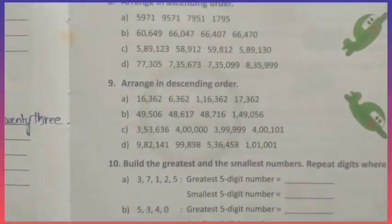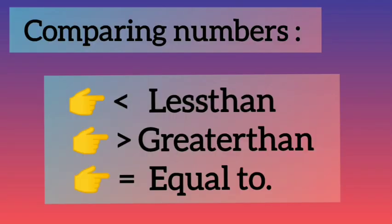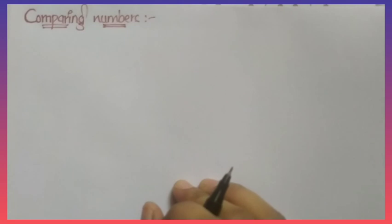Now, comparing numbers. We use three symbols in mathematics to compare numbers: less than, greater than, and equal to. We have already learned some rules to compare numbers. Now I will explain the rules once again.